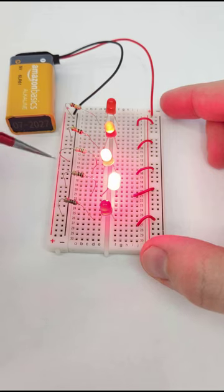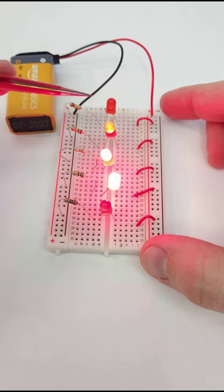Here I have 10, 100, 1000, 10,000, and 100,000 ohm resistors in series with LEDs connected to a 9-volt battery.